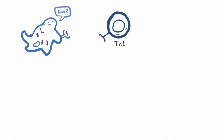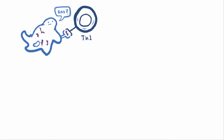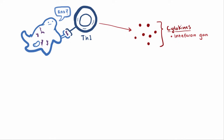At that point, T helper cells, or Th1 cells, swoop in and release cytokines, which are cell-signaling molecules like interferon gamma and tumor necrosis factor alpha, which further stimulate the inflammatory response.